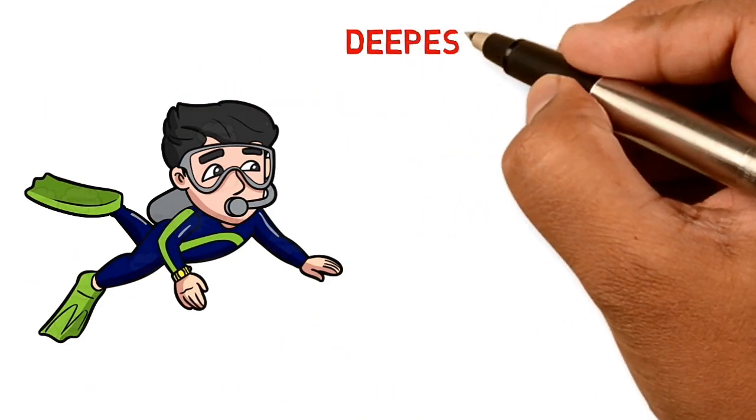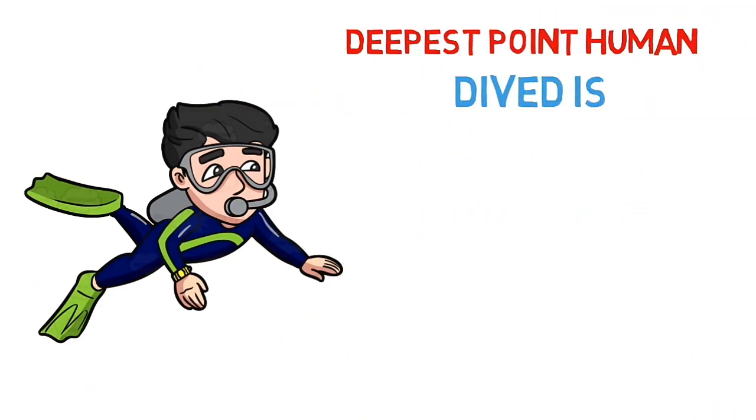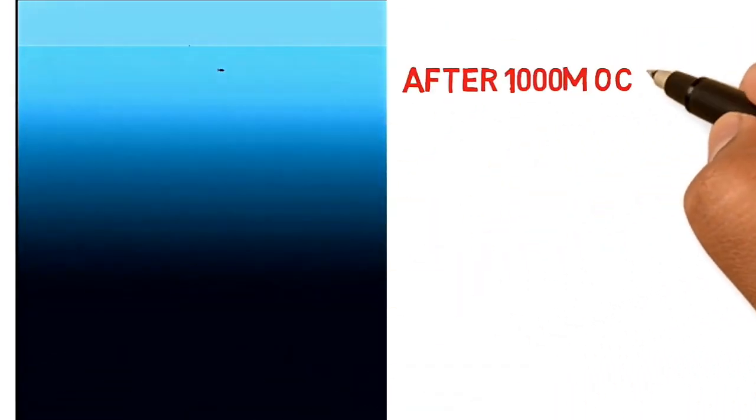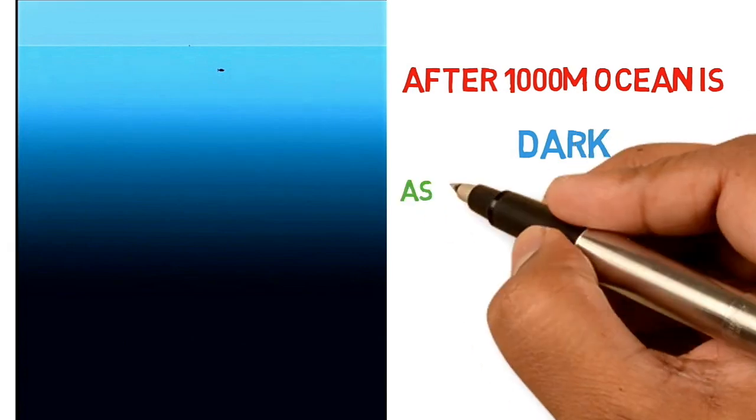The deepest point a human has ever dived is 332 meters, by Ahmed Gabr. After the depth of 1,000 meters, you will see nothing because sunlight can't reach that far down.